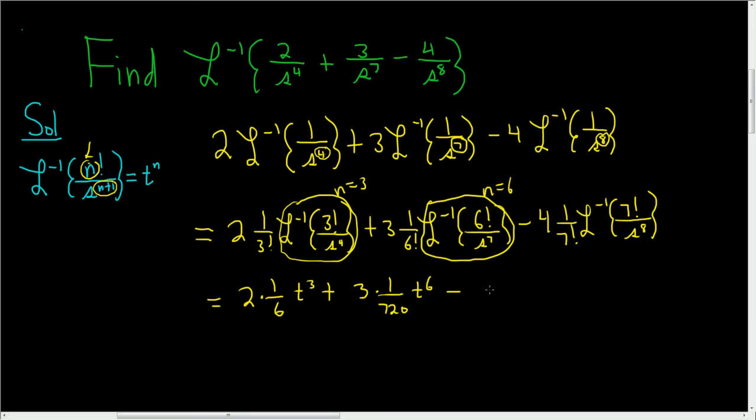Minus, we have the 4. And 7 factorial is, should have done this problem beforehand, is 5040. Excellent. And in this piece here, the n is equal to 7. I really should do these problems before I make the video. So t to the 7th.